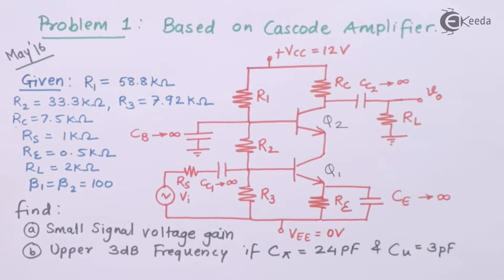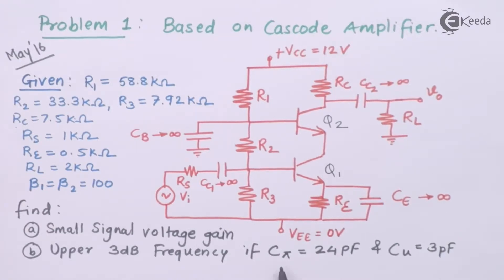We have to find the small signal voltage gain and, for part B, the upper 3 dB frequency — that is the higher cutoff frequency FH. For the upper cutoff frequency we need the intrinsic capacitances Cπ and Cμ.